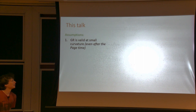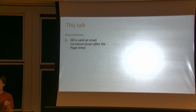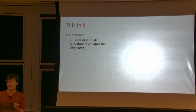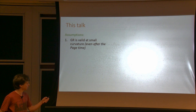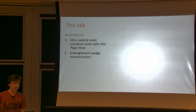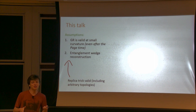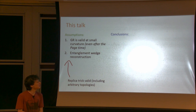I'm going to make the following assumptions. I'm going to assume that general relativity is a valid description of the effective field theory and that it can be used to calculate most quantities you might want to calculate, including the page curve — even after the page time, where the conventional wisdom would say that the GR description has to have completely broken down if the information is to have got out. And I'm going to assume entanglement wedge reconstruction, which really means I'm assuming that the replica trick gives correct answers for entropies, and that when you do the replica trick, you're allowed arbitrary topologies that connect the replicas in arbitrary ways.